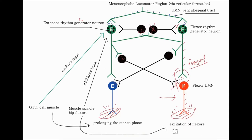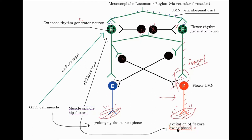Excitation of the flexors means the swing phase will occur. For example, when the cat is in the stance phase and this muscle spindle input is delivered to the CPG, it will stop the stance phase and move to the swing phase, making the transition quicker. The transition between swing and stance phases becomes more rapid, allowing a faster speed of gait.